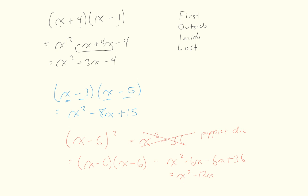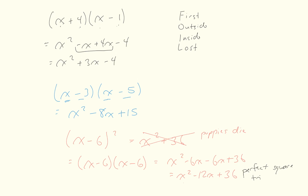FOILing (x − 6)(x − 6) gives: x squared, minus 6x, minus 6x, plus 36, which collects to x squared minus 12x plus 36. Notice the pattern: the expression starts and ends with perfect square terms (x squared and 36) with a middle term in between. We call this a perfect square trinomial — you'll become very familiar with it before the end of the unit.